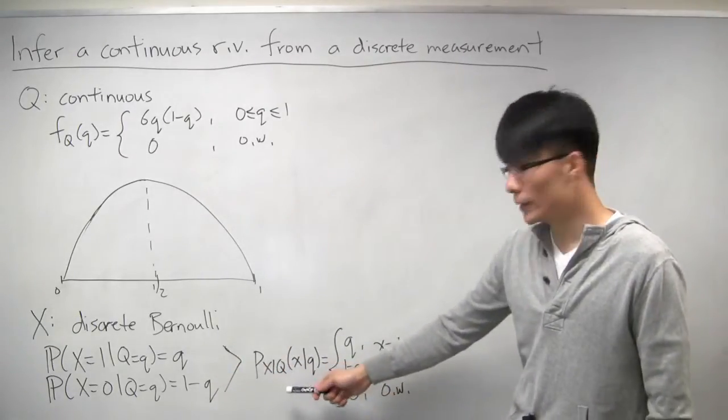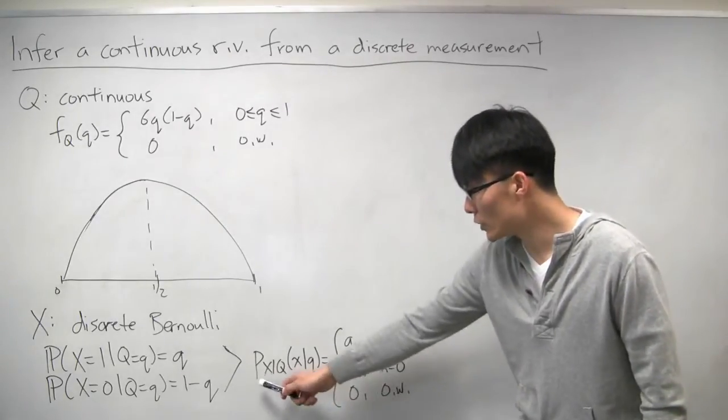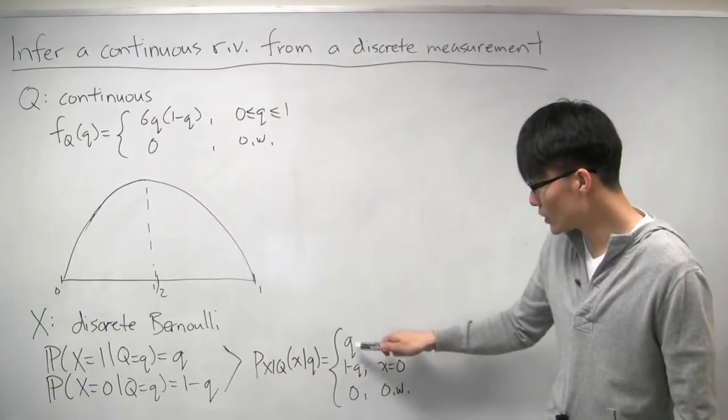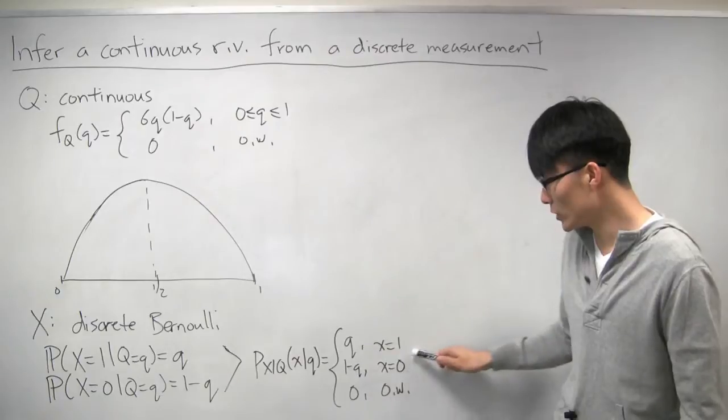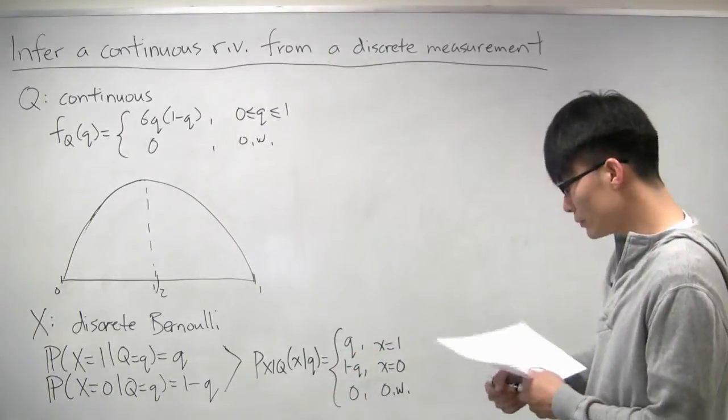We can also write this another way, as more like a conditional PMF. So the conditional PMF of x given q of little x is q if x is 1, 1 minus q if x is equal 0, and 0 otherwise. Just a more compact way of writing this.